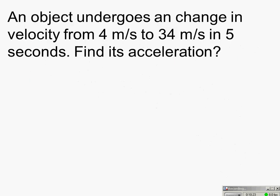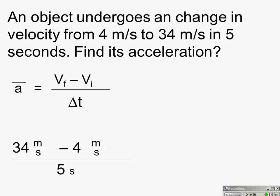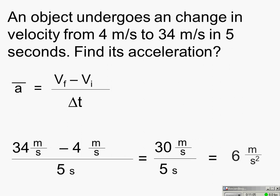Here's a quick problem: an object undergoes a change in velocity from 4 meters per second to 34 meters per second in 5 seconds. Using the formula, average acceleration equals (v-final minus v-initial) over delta t: (34 m/s − 4 m/s) / 5 s = 30 m/s / 5 s = 6 meters per second squared.